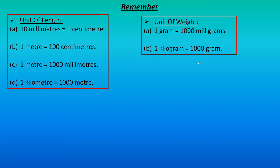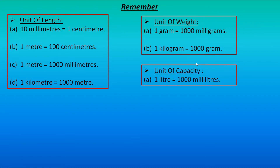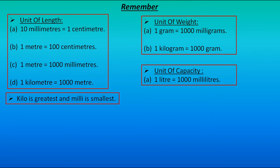The next point is unit of capacity. Whenever we measure capacity, we use the unit liter or milliliter. One liter makes 1000 milliliters. And the next point is: kilo is the greatest and milli is the smallest.